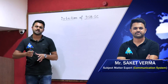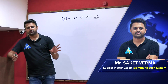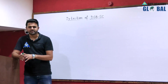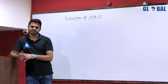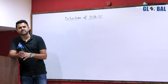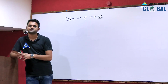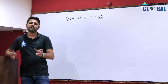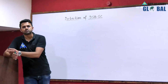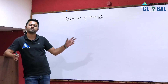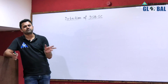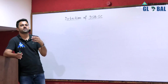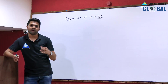Next is double sideband suppressed carrier demodulation. We have to recover our message signal from double sideband suppressed carrier, and for this there is only one method we have already discussed: the synchronous detector. In the synchronous detector there should be two blocks — the first is a balanced modulator. The balanced modulator gives an output proportional to the product of its inputs, so we will use a balanced modulator in place of a multiplier, followed by a low pass filter for detection of double sideband suppressed carrier.